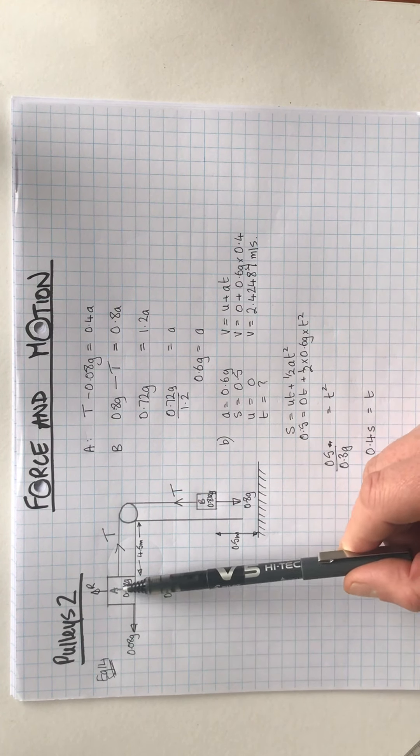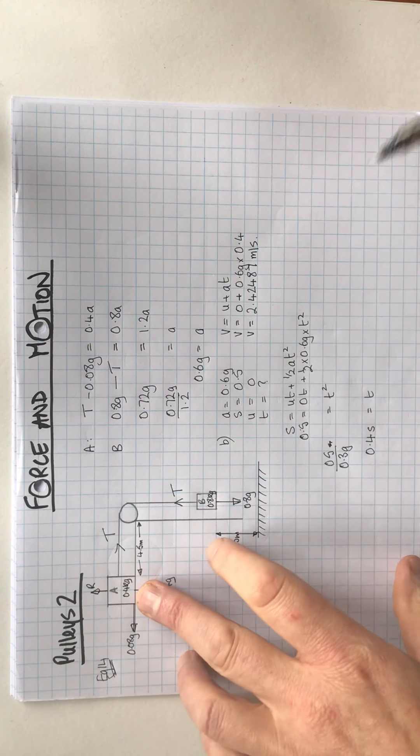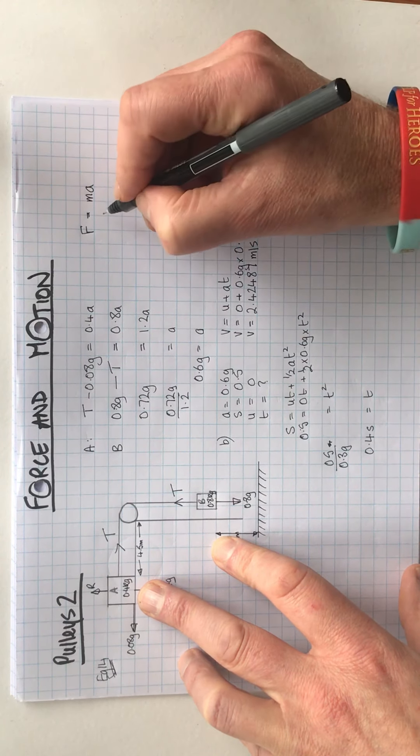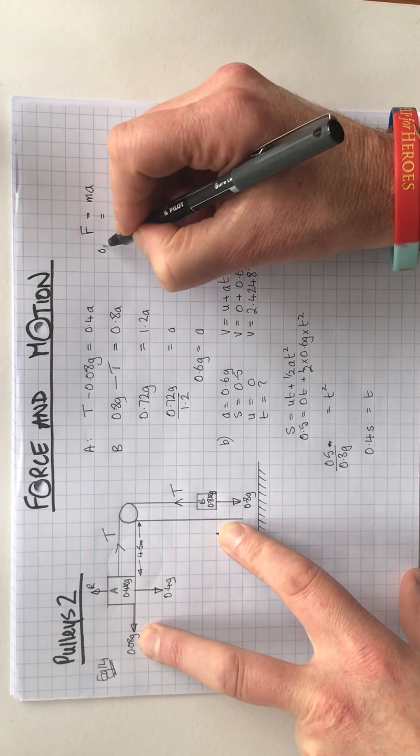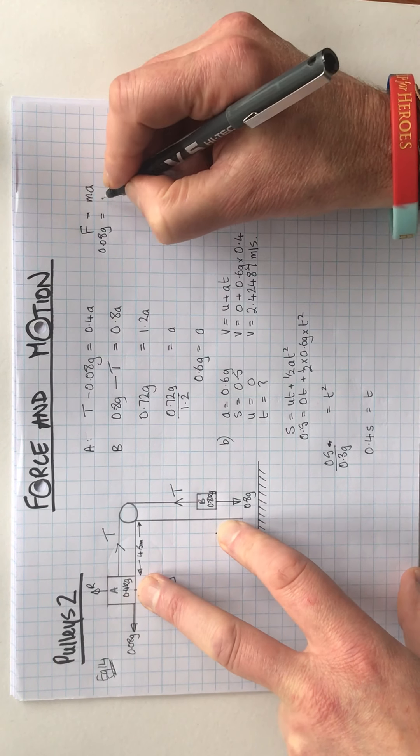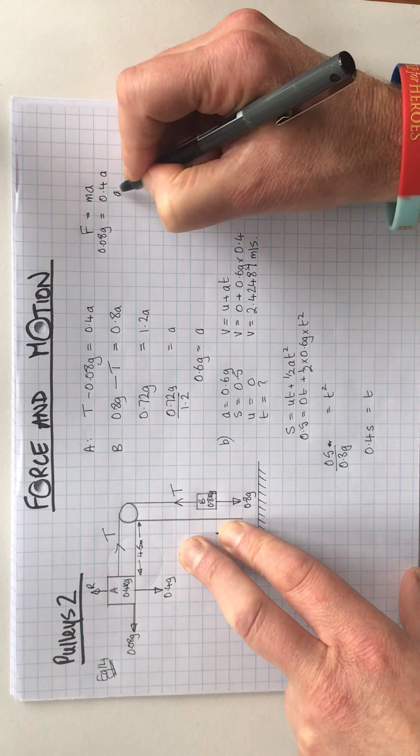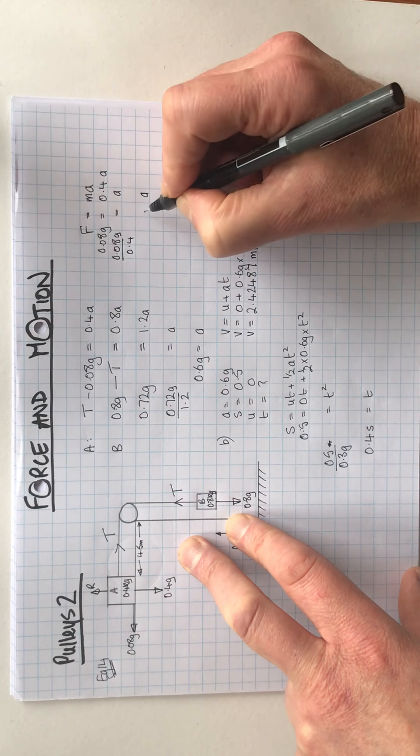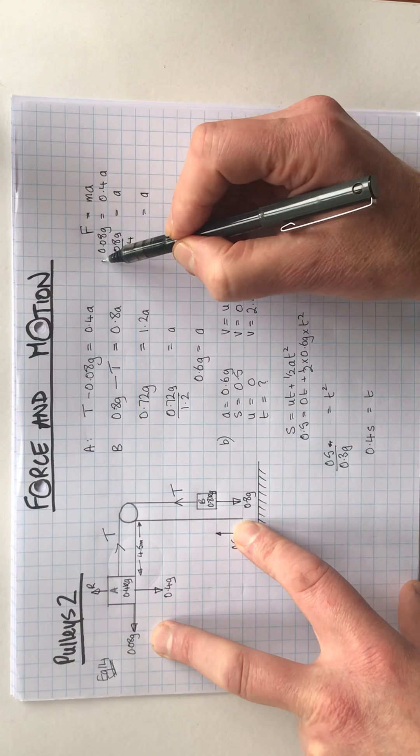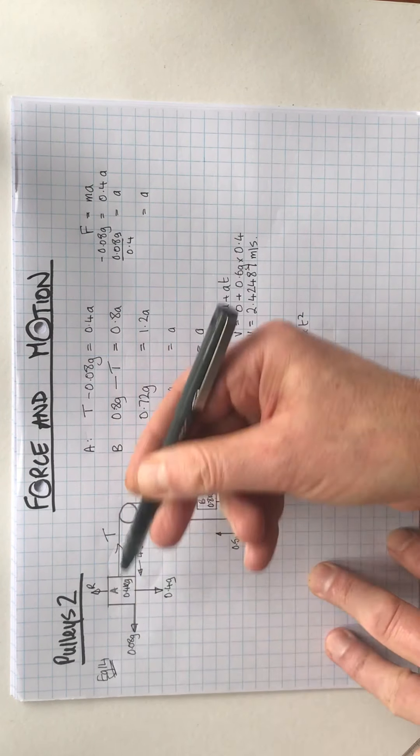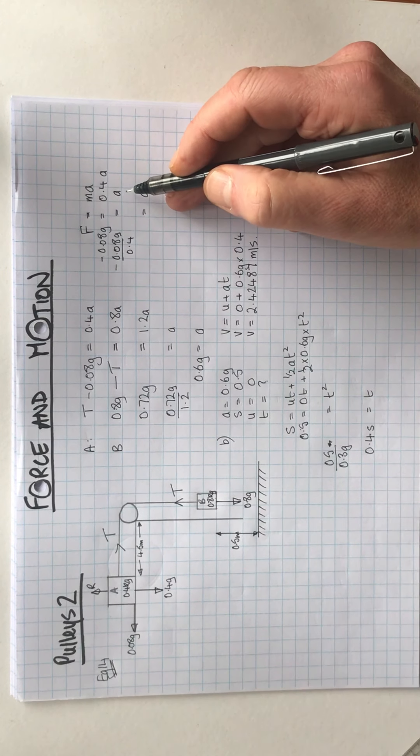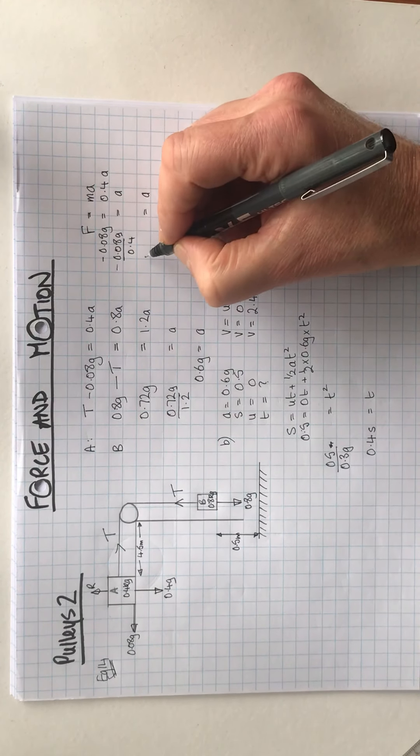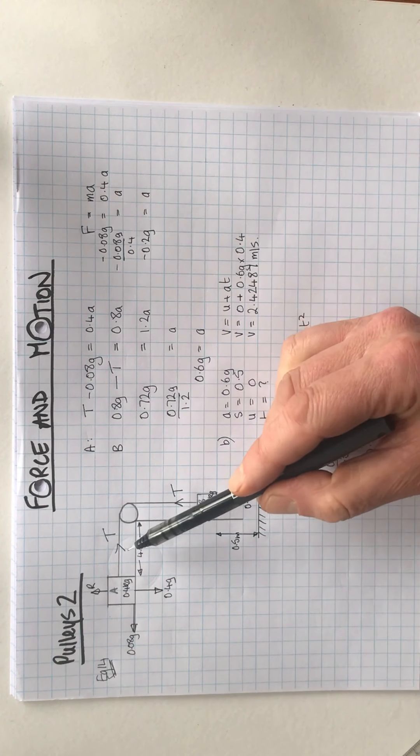We then only have one force acting on this in this direction because there is no longer a tension in the rope. The only force we have is the 0.08. So we can now work out what the deceleration of this is because it's going to slow down. Force is mass times acceleration. The force we've got acting on it is 0.08g. The mass is 0.4 times A. So A is 0.08g divided by 0.4. So the acceleration or the deceleration of the object, you can call that a negative value because it's in the opposite direction to motion. So that's minus 0.2g. That's its deceleration.